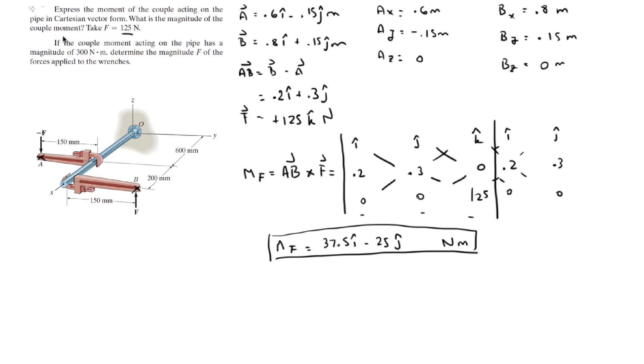Now they're asking you also for the magnitude. The magnitude is easy to find. All you got to do is 37.5 squared plus 25 squared, and all of that square root, and that will give you that the magnitude is equal to 45.07 newton meters.